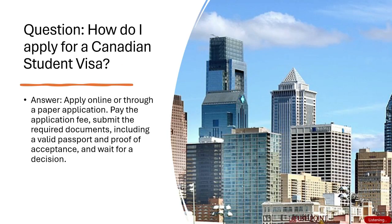Slide 3 — Application Process Question: How do I apply for a Canadian Student Visa? Answer: Apply online or through a paper application. Pay the application fee, submit the required documents — including a valid passport and proof of acceptance — and wait for a decision.